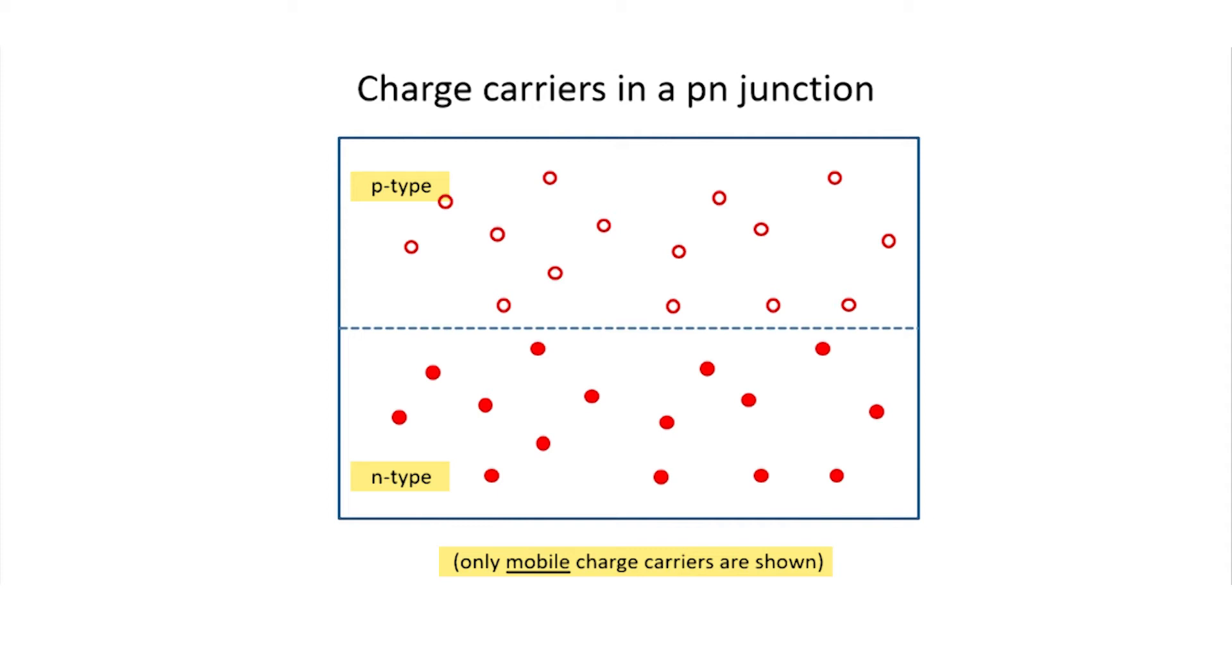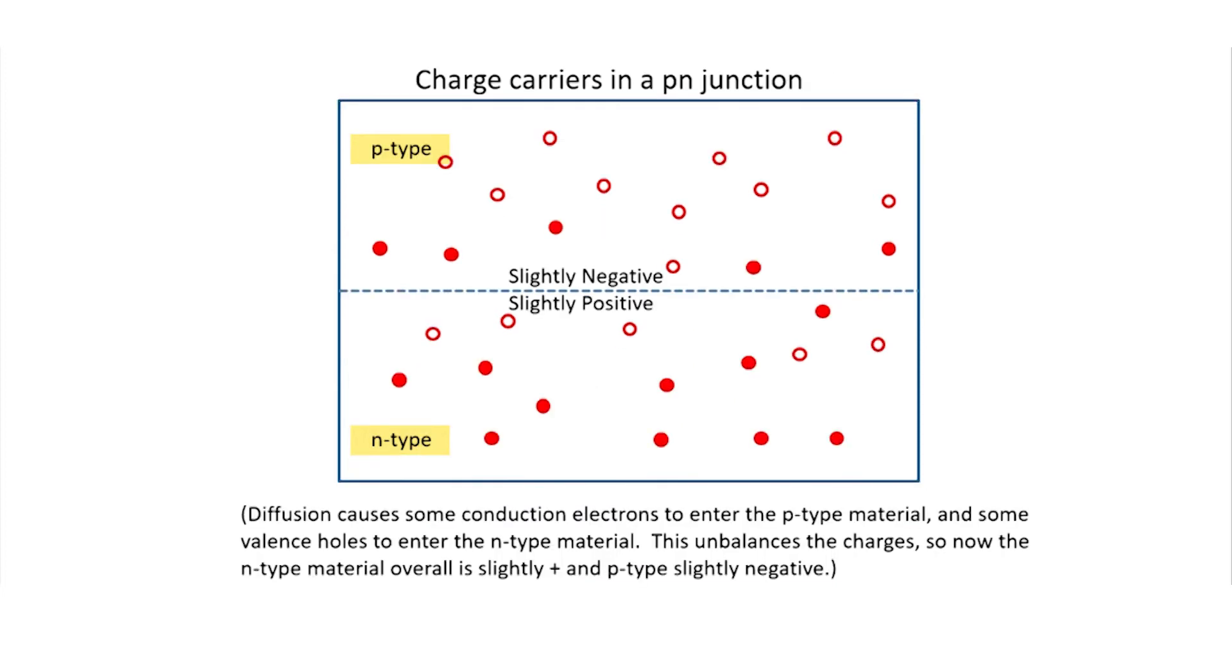They're going to diffuse, and you'll start ending up with an excess number of electrons and holes on either side of the junction. So, for example, if some of the electrons from the n-type material diffuse over here, some of the holes from the p-type material diffuse down here. What stops them from diffusing all over the place?